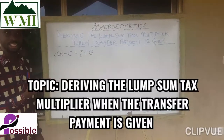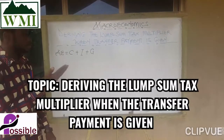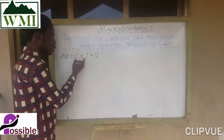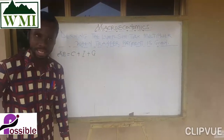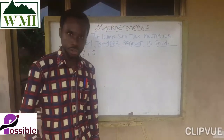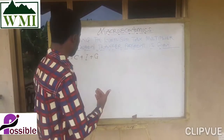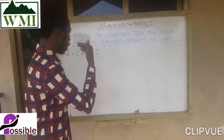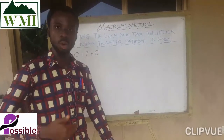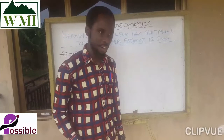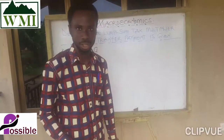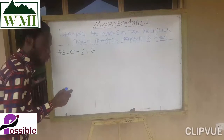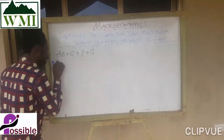From our previous lectures, we know that aggregate expenditure is equal to consumption plus investment plus government spending. This is a two-sector closed economy whereby there is government intervention.